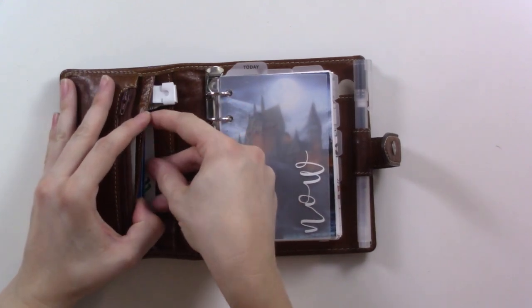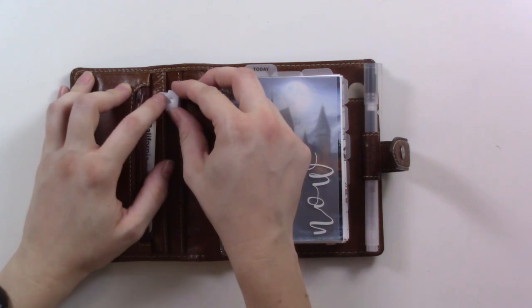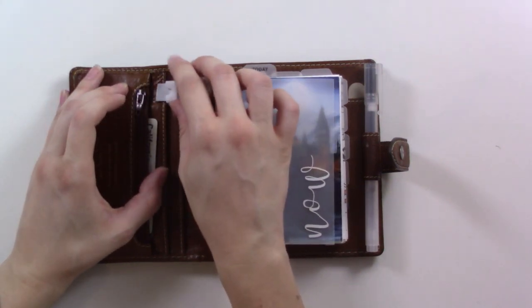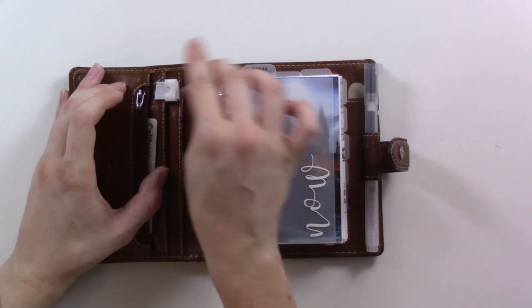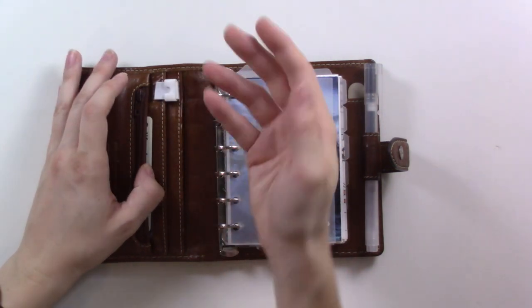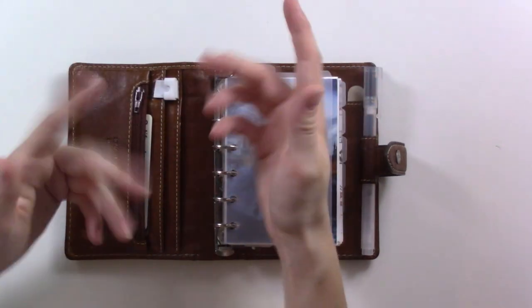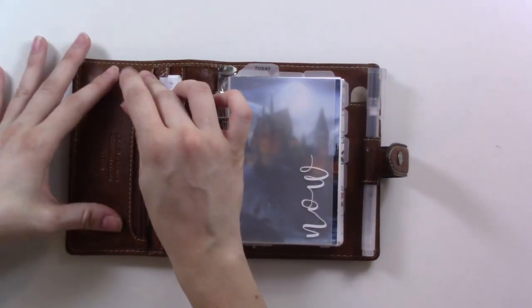This next one has insurance cards and another credit card. This here is the baby's hospital bracelet because it has her medical record number on it. Until we get her insurance card, I need that number to reference if I'm calling the doctor or whatever about her.